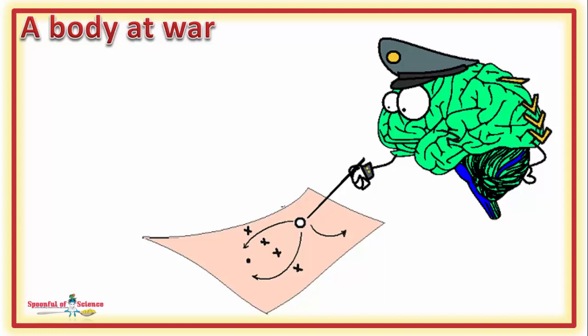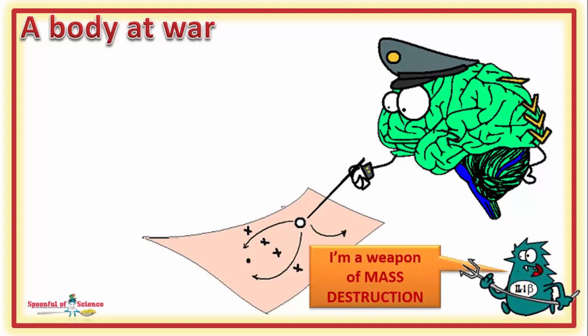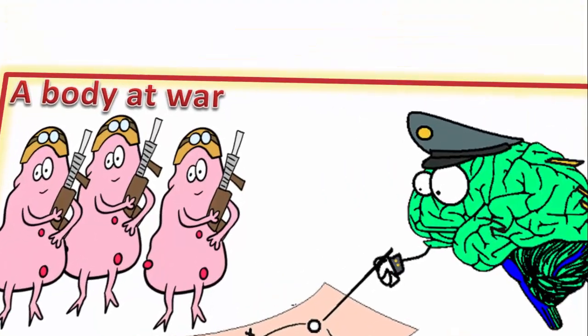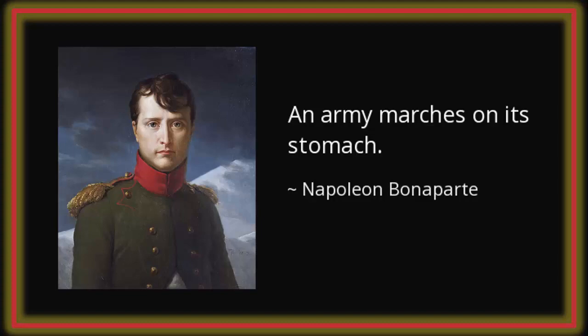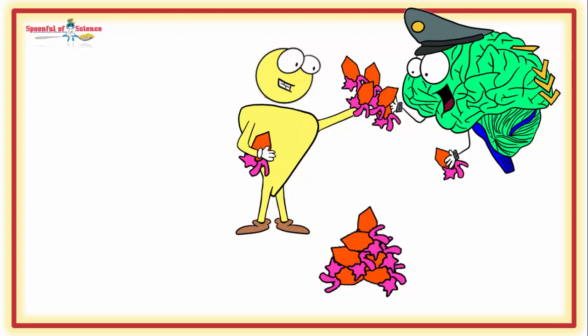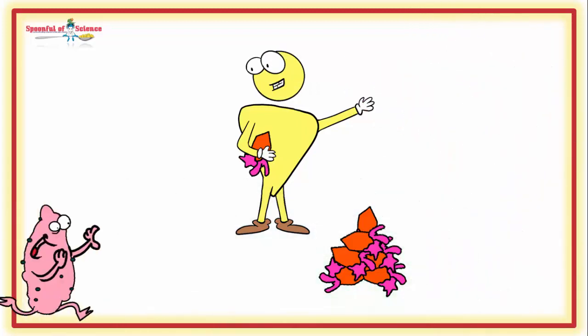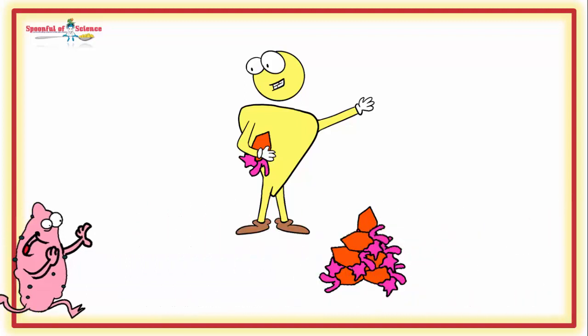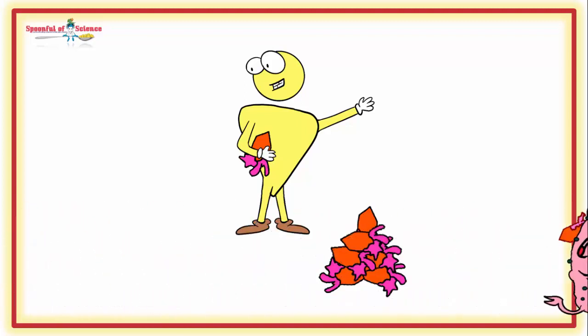The immune system produces sophisticated weapons, but these weapons are useless without boots on the ground. And a very famous general once noted, the troops must be fed, starting with the chief of the armed forces, the brain, then the soldiers on the ground, the lymphocytes and macrophages, who are the cells doing the actual work.